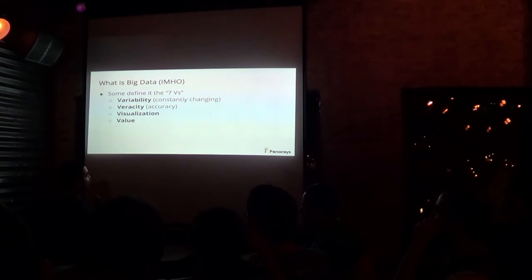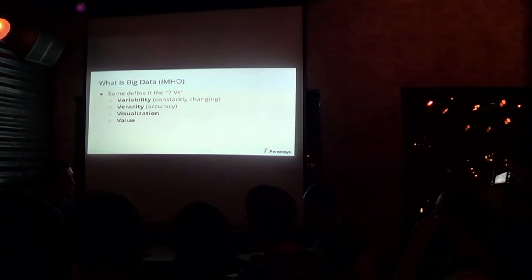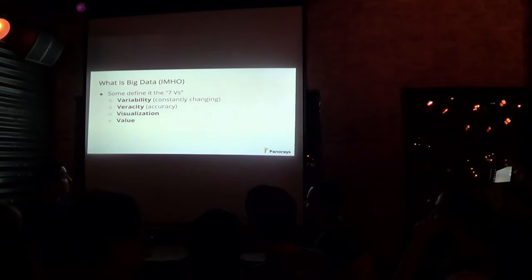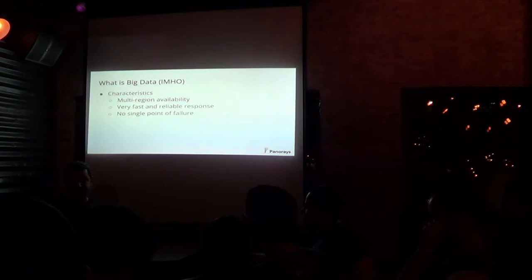Some people actually add more V's and define seven V's: variability — when it's constantly changing and you don't know the schema of the data; veracity — the actual accuracy of your data; visualization of all of this process; and of course, what value are you getting from the data.